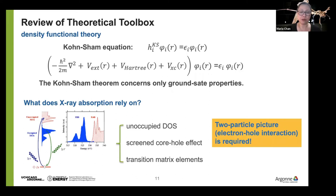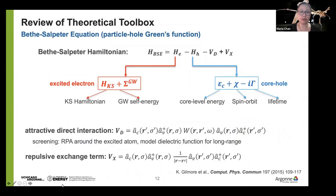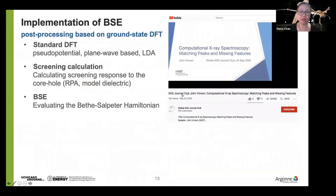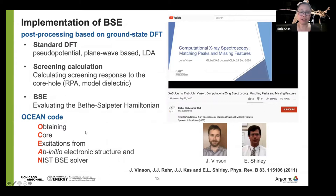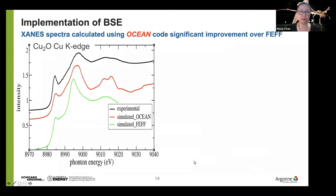The Bethe-Salpeter equation approach makes use of the electron-hole interaction and includes attractive direct interaction as well as a repulsive exchange term. In this lecture series, there was a very nice talk by the developer of the code we use — John Vinson. We rely heavily on his code called OCEAN: Obtaining Core Excitation from Ab initio Electronic structure, a Bethe-Salpeter equation solver, built upon earlier work by Eric Shirley.